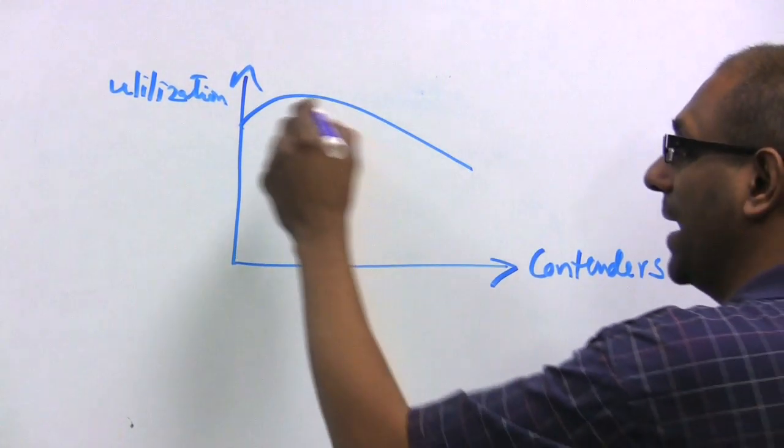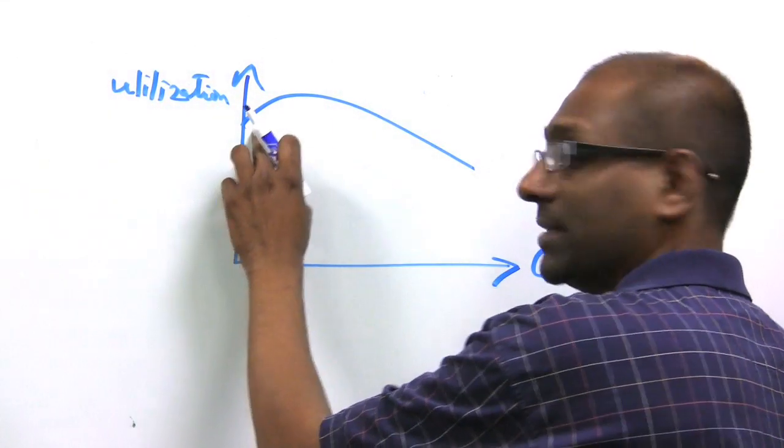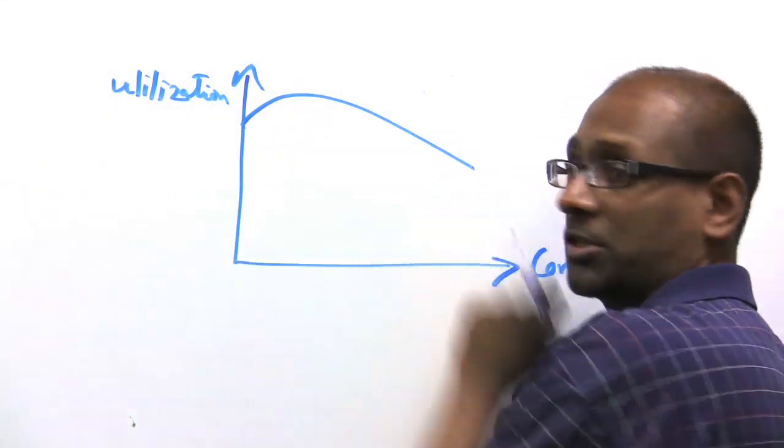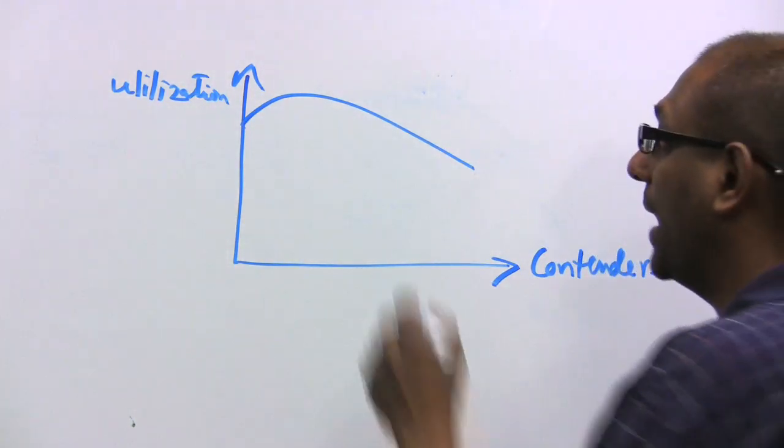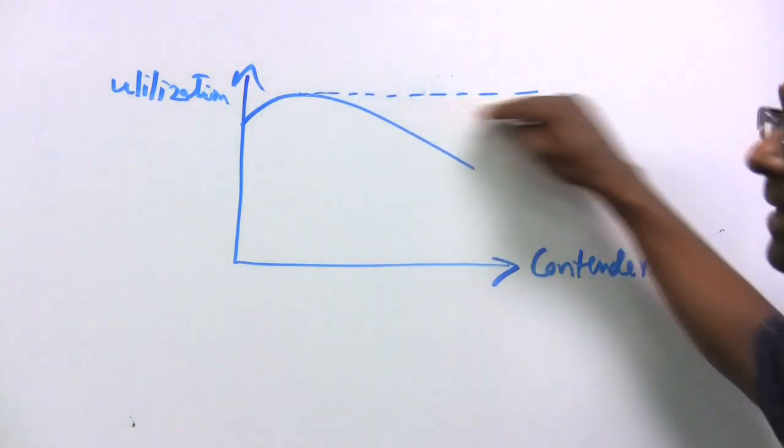The idea is that for a few contenders, as the number of contenders increases, the utilization actually goes up, but then it starts to drop off. This is really the peak. The ideal is to flatline at the peak.